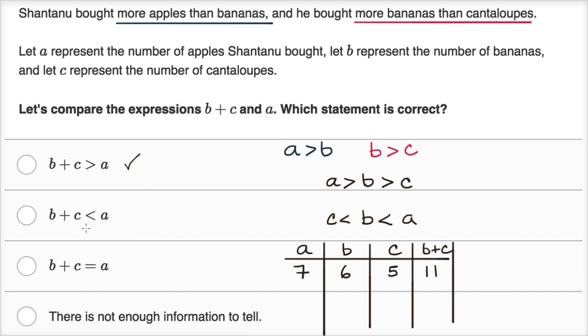Let's see if we can figure out a scenario where B plus C is less than A. Well, we could do the same B and C, six and five. We can make A bigger than six plus five. We can make A twelve. And now this is a situation where B plus C is less than A.